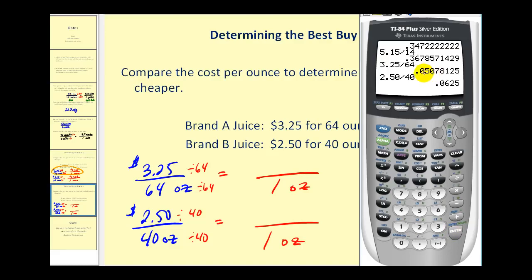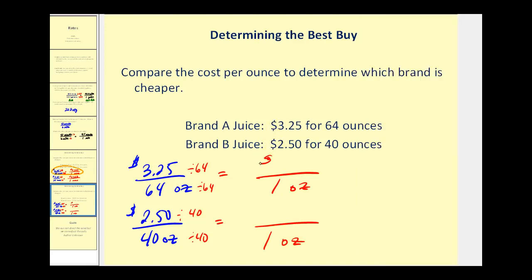You can see brand A is approximately 5 cents per ounce, and brand B is a little bit more than 6 cents per ounce. Let's go ahead and record this.